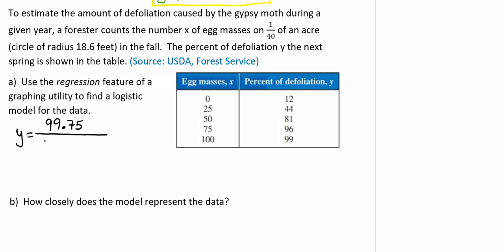0.069 plus 7.16 times E to the negative 0.069X.